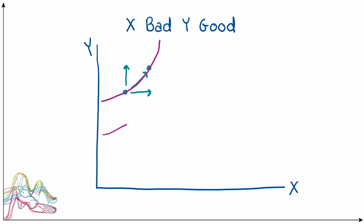Adding another indifference curve, we can compare relative levels of utility. Moving to the right means having more of good X but the same amount of good Y. Since X is a bad, that move makes the consumer less happy — lower utility. So the indifference curve on the right is ICL for low utility, and the indifference curve on the left is ICH for higher utility.